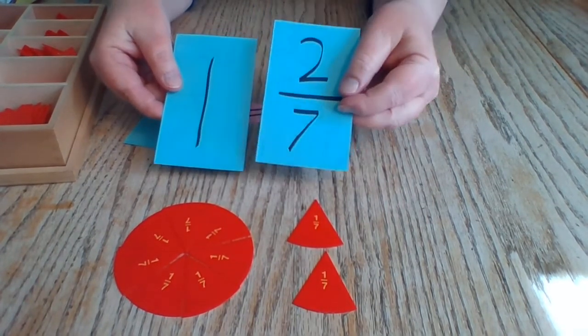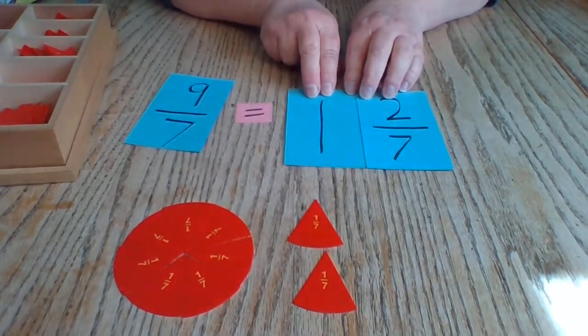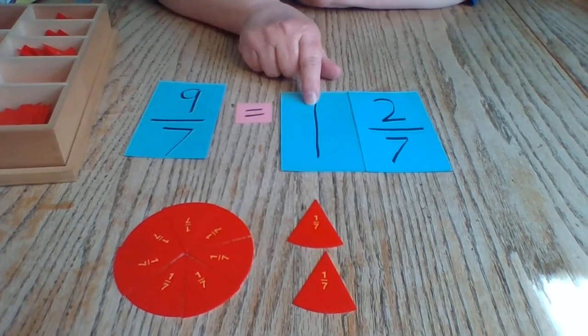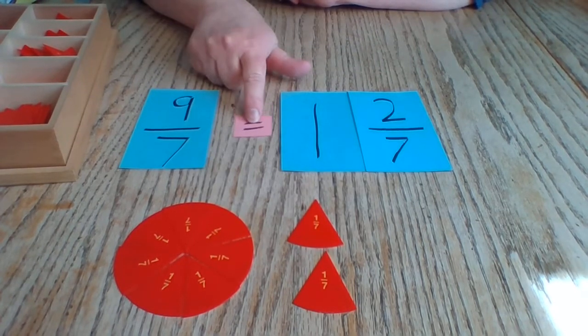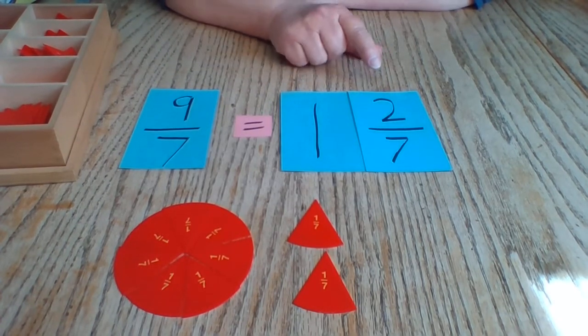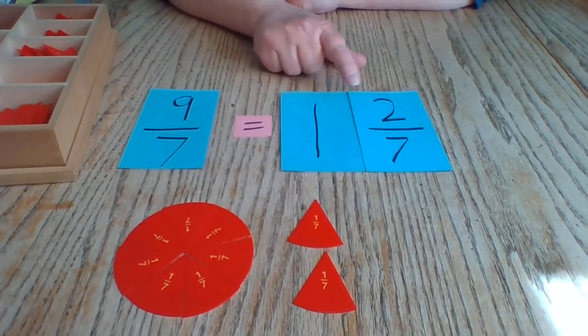So our nine-sevenths has now turned into one and two-sevenths. One whole and two-sevenths is a mixed number and this is how you write it. So nine-sevenths is equal to one and two-sevenths. We have changed this improper fraction to a mixed number.